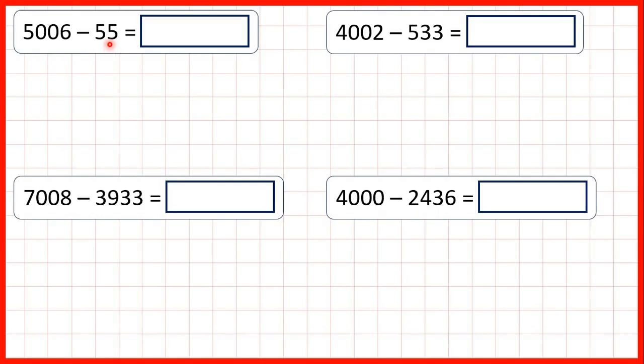We need to subtract using column subtraction, but this time we'll need to exchange across zeros — exchanging across more than one place value.